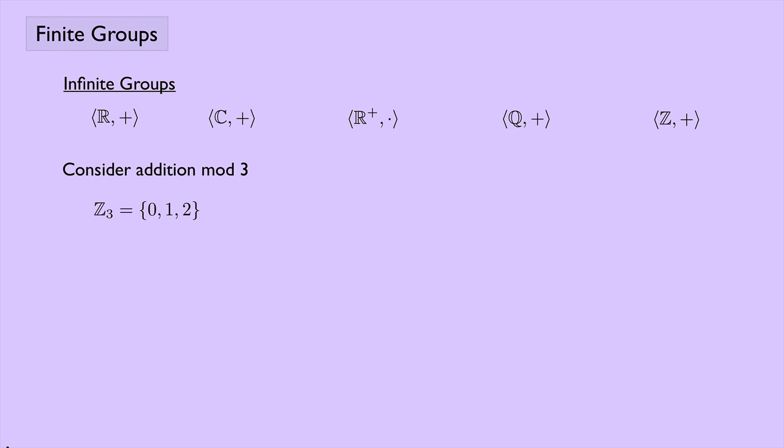We want to ask: is this a group? In order to be a group, we need to check the four group properties. Is it closed? Is it associative? Is there an identity element? And does every element have an inverse? In order to figure this out, it might help to play around with this group and understand it a little bit.